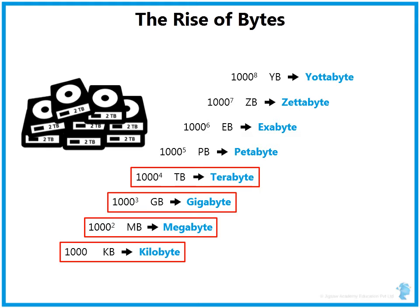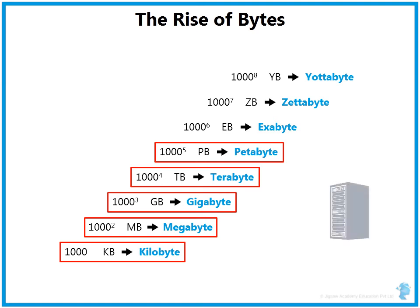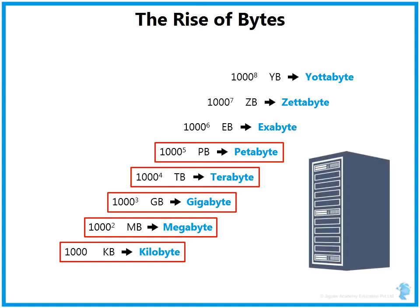Traditionally existing systems — RDBMS-based systems and other software — were quite comfortable handling up to terabytes of data. The real challenge started when we moved to petabytes of data, which is 1,024 terabytes, or simply rounded off to 1,000 terabytes. The current problem we are trying to tackle is data larger than a few petabytes. When we talk about big data, we are not dealing with terabytes — it is petabytes and upwards, and that is what big data problems are mostly about.